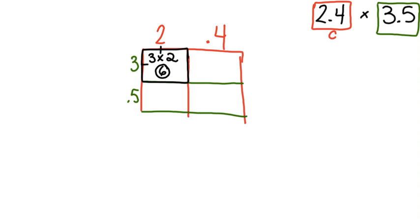Now I am going to take this first 3 in the first row and meet it up with the 4 tenths in the second column — I know I am going to have 3 wholes times 4 tenths. When multiplying a whole number by a decimal, I pretend like they are just two whole numbers at first, and I know 3 times 4 equals 12. Now I need to look at the decimal places: only one of those numbers has a decimal and it is only one place over from the back, so I move my decimal one place over and my new number is 1 and 2 tenths.